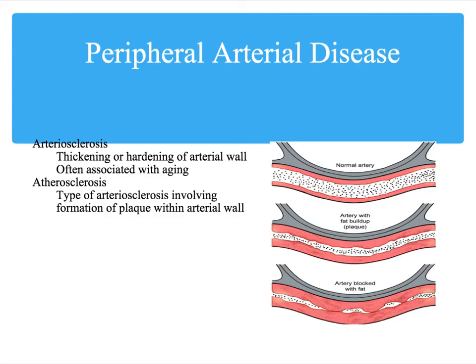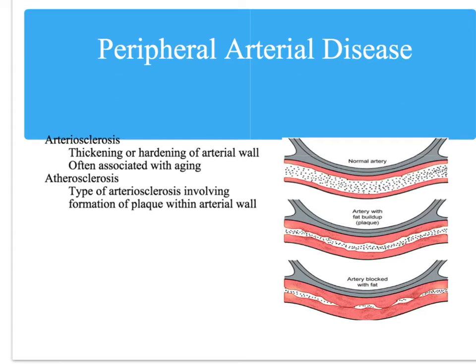Most peripheral vascular disorders of the arteries are a consequence of arteriosclerosis, which is the thickening or hardening of the arterial wall. This impedes circulation from the heart to the lower extremities, so the blood flow is blocked and the extremities do not get adequate blood flow. This can cause ischemia of the muscles in the lower extremity.